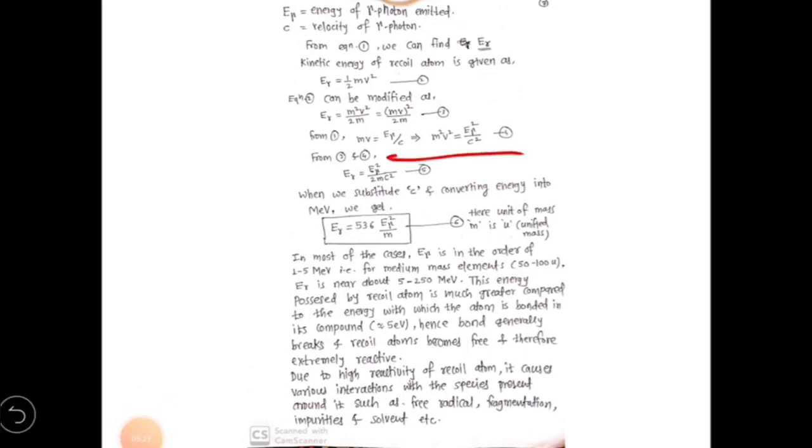Now equation 1 can be modified as: we have taken equation 1, that is m·v = E_gamma/c. Now we have squared both sides, therefore we get m^2·v^2 = E_gamma^2/c^2. From equation 3 (that is this equation) and equation 4 (that is this equation), we can write: E_r = E_gamma^2/(2mc^2).